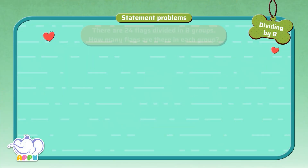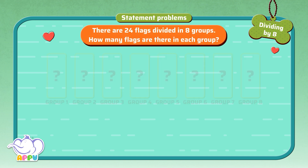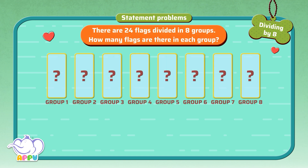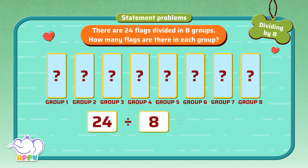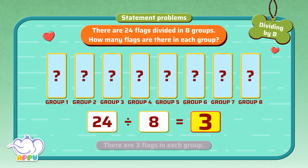There are 24 flags divided in 8 groups. How many flags are there in each group? To find the number of flags in each group, we divide 24 equally among 8 groups. There are 3 flags in each group.